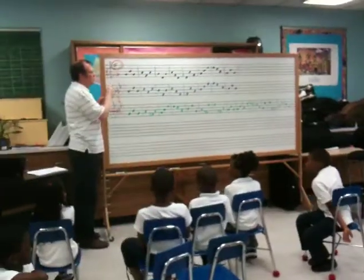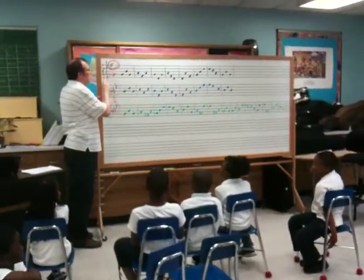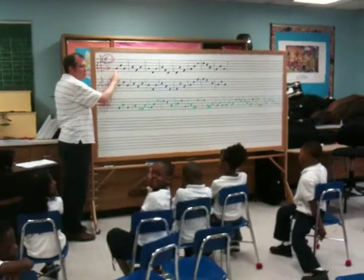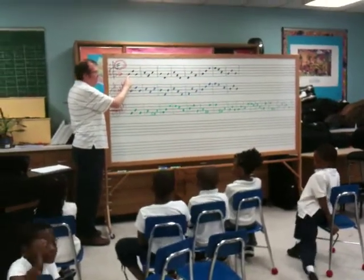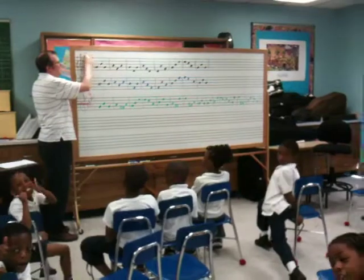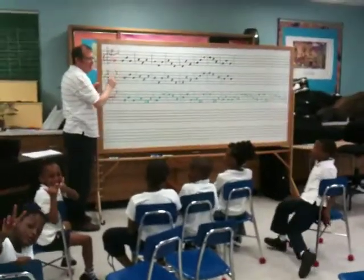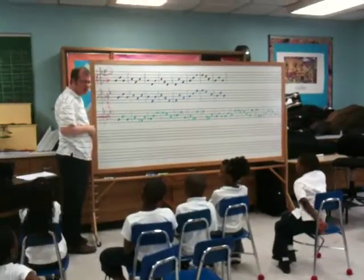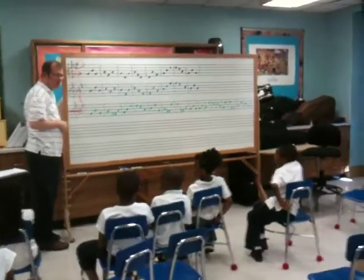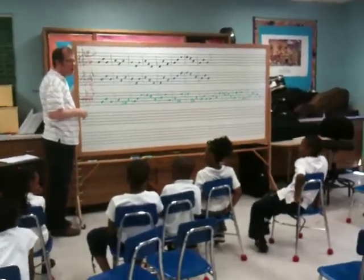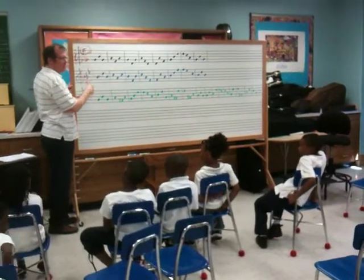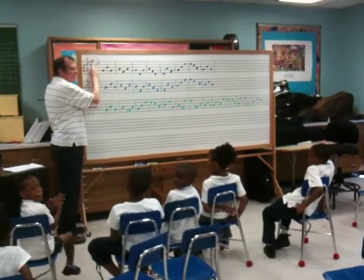Here we go, boys and girls. Do is on the second line — this is G-Do. How do I know it's G-Do? Well, this thing makes sure we have Ti, because otherwise we have songs like Coochie Coochie Dance or the Elephant Telephone song. And we don't want songs to end on So — we want the song to end on Do. So I need Ti.